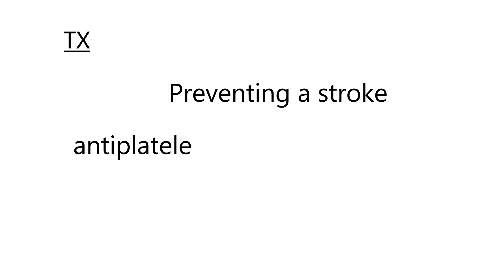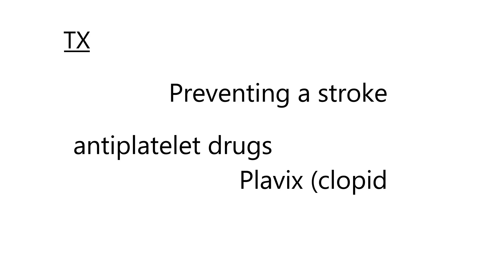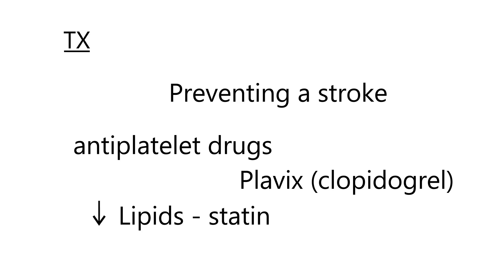The treatment of TIA is really focused on preventing a stroke down the road. The patient has presented with serious warning signs, so you want to make sure a stroke does not happen. Anti-platelet drugs are a common mainstay of treatment. The most common is Plavix, whose generic name is clopidogrel, and it is used extremely commonly. You also want to lower cholesterol, which is done with statin drugs such as simvastatin or lovastatin.